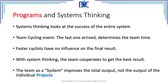Another element we can introduce here is programs and systems thinking. Systems thinking relates to the success of an entire system — or in our case, a program. Let's consider a team cycling event, like those we know from the Tour de France. The time is set by the last person crossing the finish line, so faster cyclists have no positive effect on the final result of the race. In order to get a better result, the better cyclists will have to help the weaker ones so they can cross the finish faster.